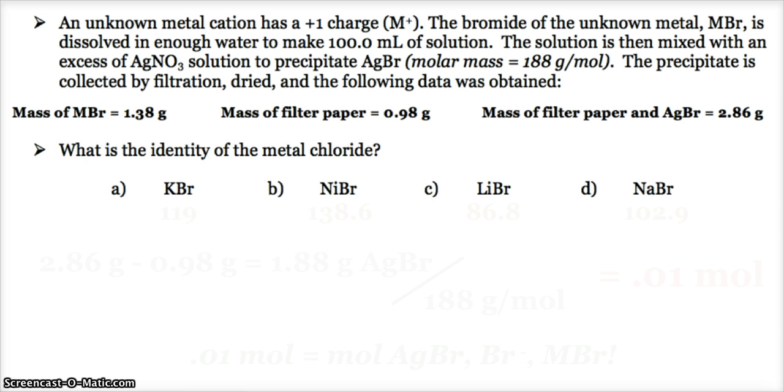And so here we have a very classic question. Again, this is a potential AP multiple choice problem. There will be math involved, but it's nothing you can't really handle without a calculator. So we've got an unknown metal cation, and this cation has a plus one charge. So we're going to abbreviate this M+. The bromide of the unknown metal, MBr,